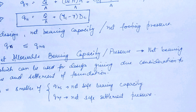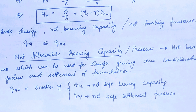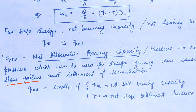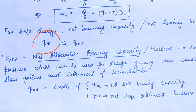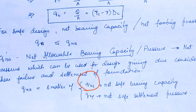The net bearing pressure used for design must give due consideration to shear failure and settlement of the foundation, because we have not considered these two while calculating Q_net. Q_net allowable actually considers these two as well. So Q_net allowable is the smaller of two values: Q_NS or Q_NP. The smaller of these two is taken as the net allowable bearing capacity. Q_NS is the net safe bearing capacity and Q_NP is the net safe settlement pressure.